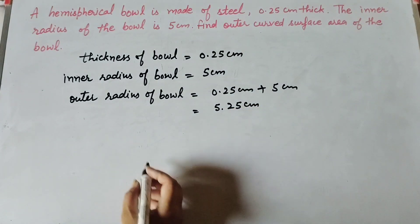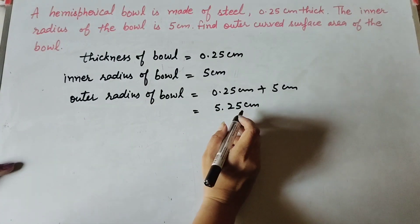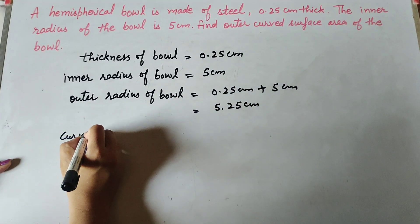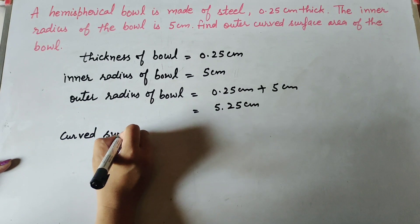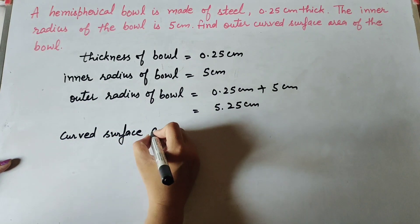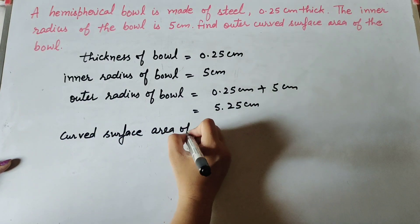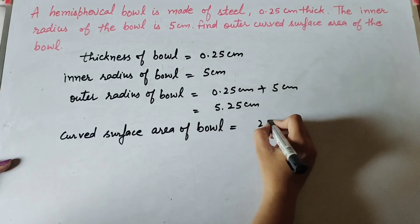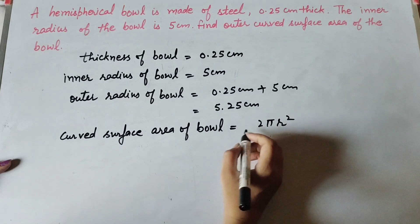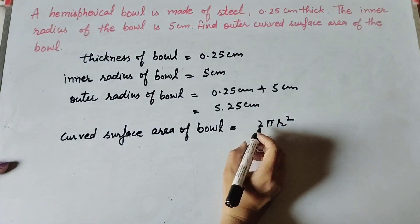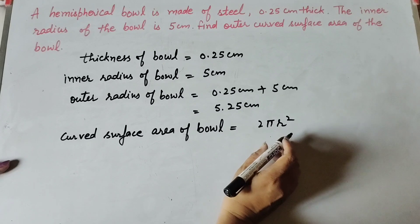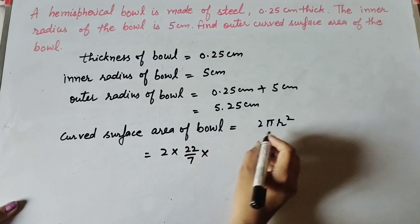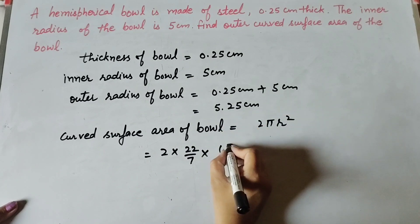Now we find the curved surface area of the bowl. The bowl is in the shape of a hemisphere, so we use the formula: curved surface area of hemisphere = 2πr². Here, π = 22/7 and r = 5.25 centimeter.